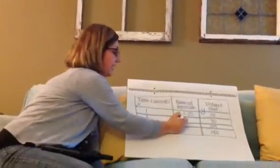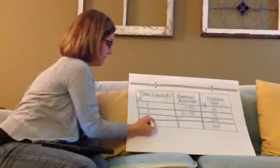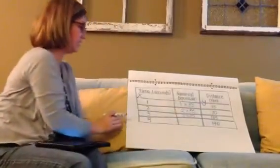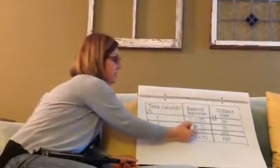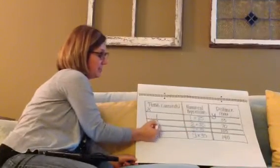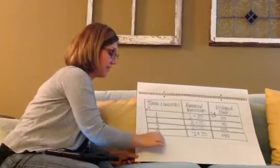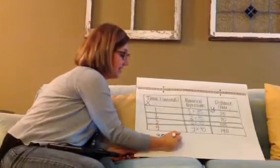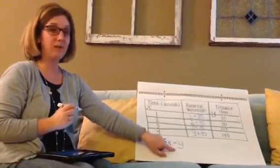For this one, 2 seconds times 35 gives us a distance of 70 feet — 2 times 35 is 70. I can show 3 times 35 for the numerical expression for the distance in feet, and 4 times 35 for the next numerical expression. Notice that the time in seconds matches the independent variable. So I can say 35 times x, or 35x, gives us our dependent variable y. So 35x equals y is our equation.